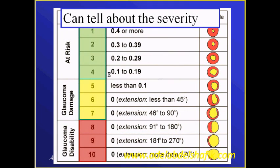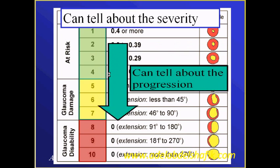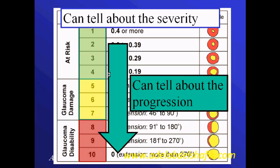This system gives us an impression about the severity of glaucoma. If you are in stages one, two, or three, these are early stages, but stages eight, nine, or ten represent advanced glaucoma. Also, if you follow the same patient over time and the staging shifts toward larger numbers, this indicates progression of glaucoma.